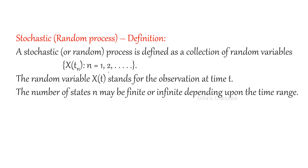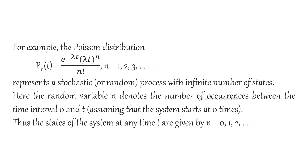X of T(N), where N varies from 1, 2, 3, etc. The random variable X of T stands for observation at any time T — at a particular time, what will be the value. The number of states N may be finite or infinite depending upon the time range. For example, if you consider the Poisson distribution, P_N(T) = e^(−λT) · (λT)^N / N!. N can take values 1, 2, 3 up to infinity — this is an infinite number of states. Here the random variable N denotes the number of occurrences between the time interval 0 and T.